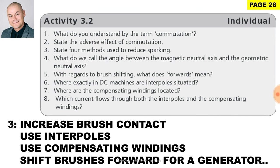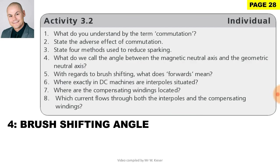State four methods used to reduce sparking: increase the brush contact using carbon brushes, use interpoles, use compensating windings, and shift the brushes forward for a generator and backwards for a motor. Question 4: What do we call the angle between the magnetic neutral axis and the geometric neutral axis? We call that the brush shifting angle.